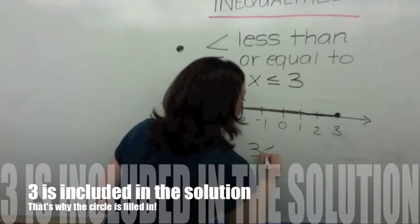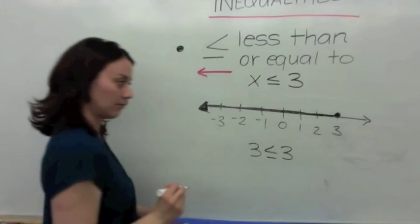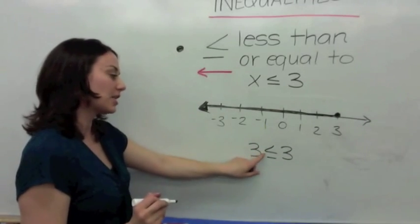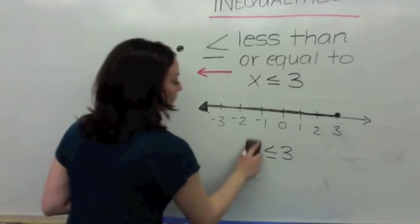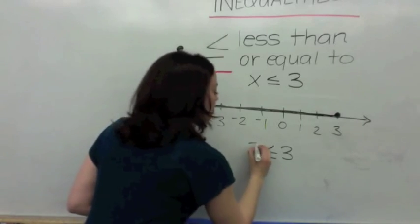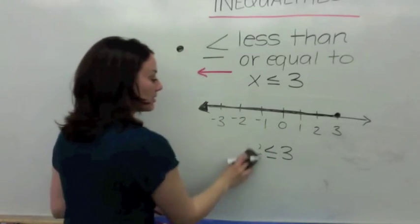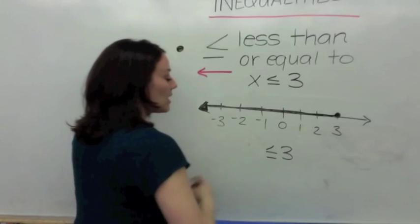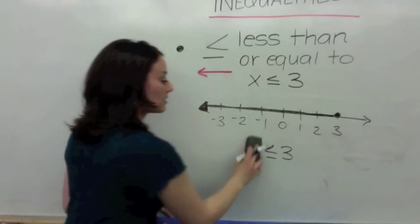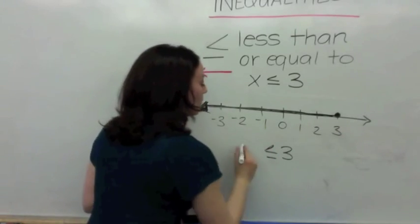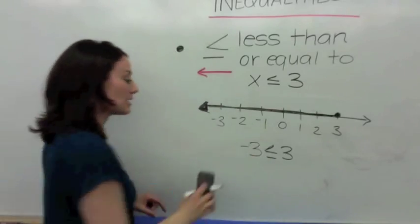Is 3 less than or equal to 3? Well, 3 is not less than 3, but it is equal to 3. Is 2 less than or equal to 3? Yes. Is 1 less than 3? Yes. How about negative 3 — is it less than 3? Yes.